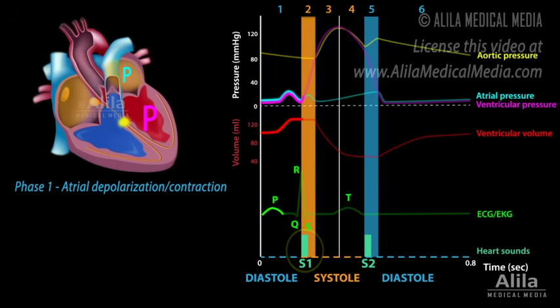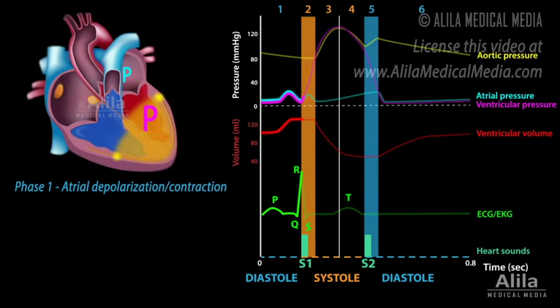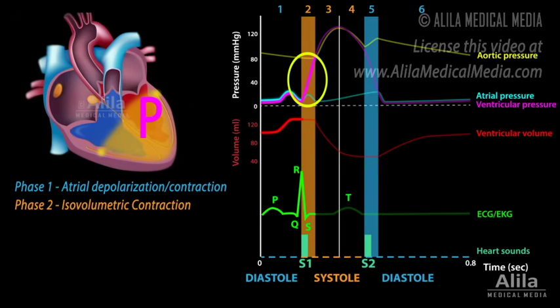At this point, ventricular depolarization, represented by the QRS complex, is halfway through and the ventricles start to contract, rapidly building up pressures inside the ventricles. For a moment, however, the semilunar valves remain closed and the ventricles contract within a closed space. This phase is referred to as isovolumetric contraction, because no blood is ejected and ventricular volume is unchanged.